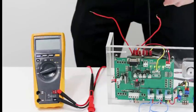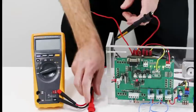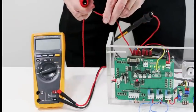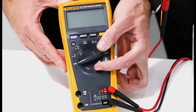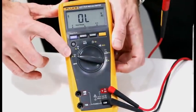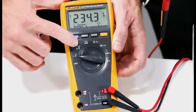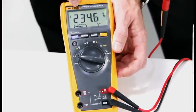I take my black test lead and connect it to my neutral wire. I then take my red test lead and connect that to my live wire. I now take my rotary dial on my Fluke 177 and turn it over to the voltage AC side. If you look here you can see I'm measuring 234 volts AC.